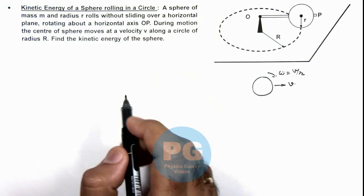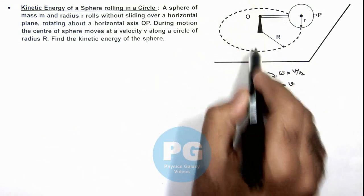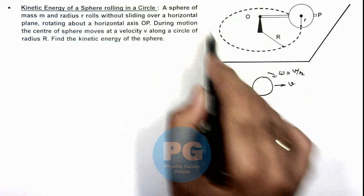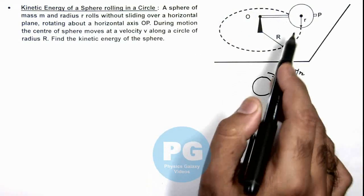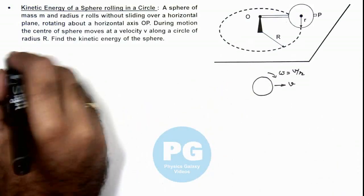We can say the angular speed about point O, about the vertical axis in which it is moving in a circular path, can be given as v by capital R. Now in this situation here we can write...